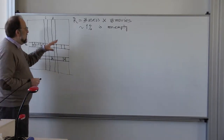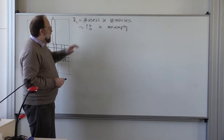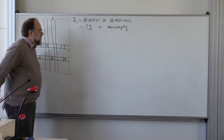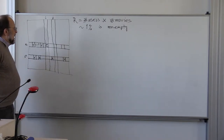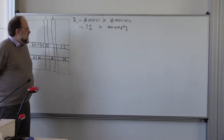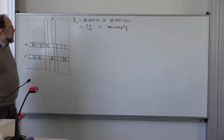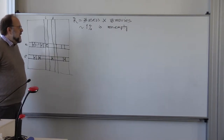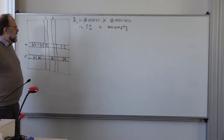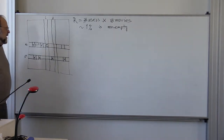In the case of the Netflix challenge, the size of the matrix was several billions. The number of movies was about 17,000, and the number of users was in the millions — or maybe hundreds of thousands, I'm not sure.